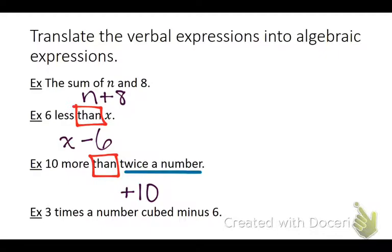So because it said the word than, I back it up, putting 10 plus going backwards. Twice a number becomes 2n or 2x. 2 and then a variable. So this is sort of what we need. 2x plus 10, 2n plus 10. 2n plus 10. All right.